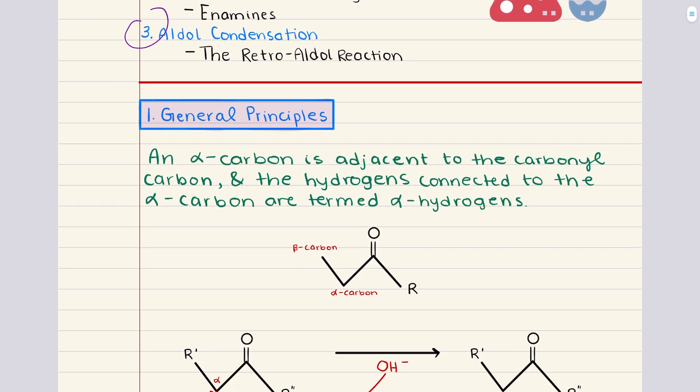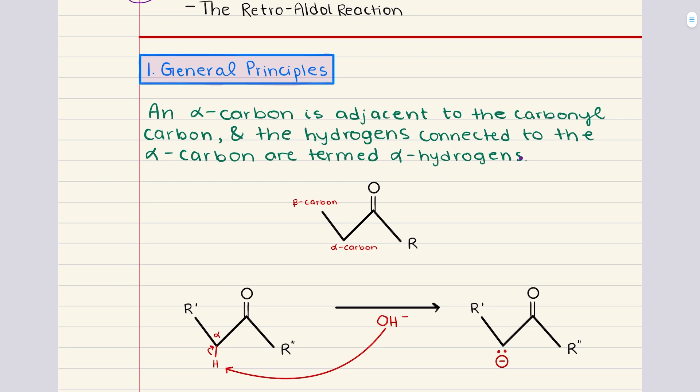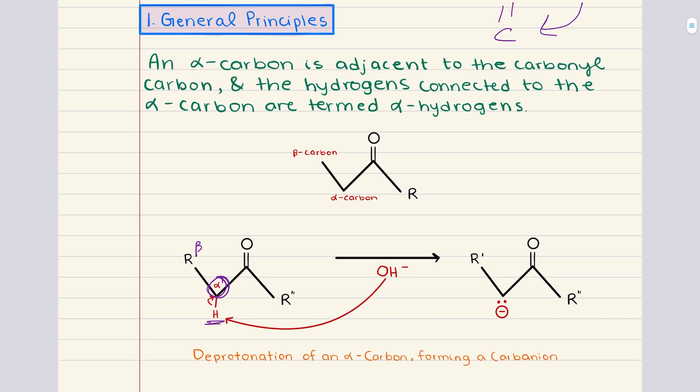Let's start with some general principles to set the stage. In a carbonyl-containing compound, meaning any molecule that contains a carbon-oxygen double bond, we use Greek lettering to describe the positions of carbons relative to this carbonyl group. The carbon that is directly attached to the carbonyl carbon is called the alpha carbon. The next one is the beta carbon, followed by the gamma carbon, and so on. The hydrogens attached to the alpha carbon are known as alpha hydrogens, and these are especially important because of their unique reactivity.